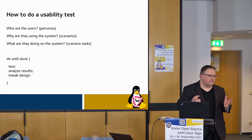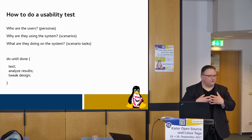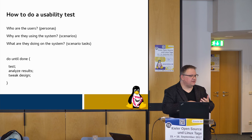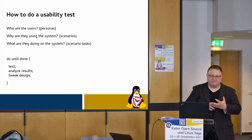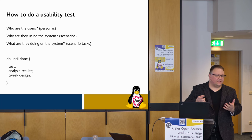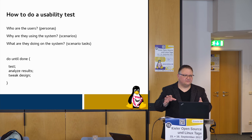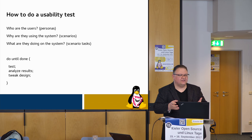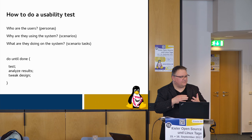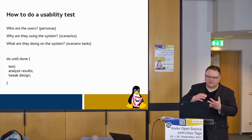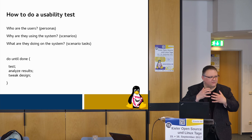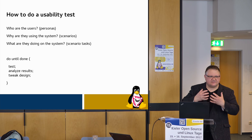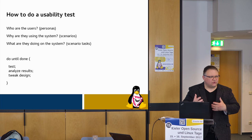A usability test is really going to be iterative. Once you define all that stuff up front, you do a test, analyze your results, tweak your design based on the results, and then do it again. Most projects that do it iteratively can figure out most of the problems in their design and get a system that works well for everybody in usually two or three iterations. So it doesn't require very many tests.